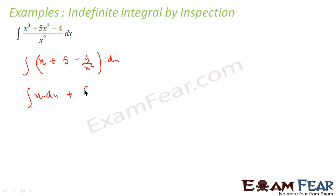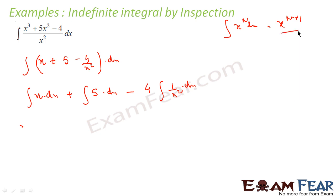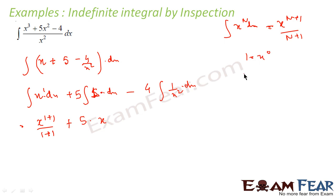This becomes the integral of x dx, plus the integral of 5 dx, minus 4 times the integral of 1/x² dx. For the integral of x dx, using xⁿ⁺¹/(n+1) with n=1, we get x²/2. The constant 5 can be taken out. The integral of 1 is x, since 1 = x⁰ and integrating x⁰ gives x¹/1 = x.